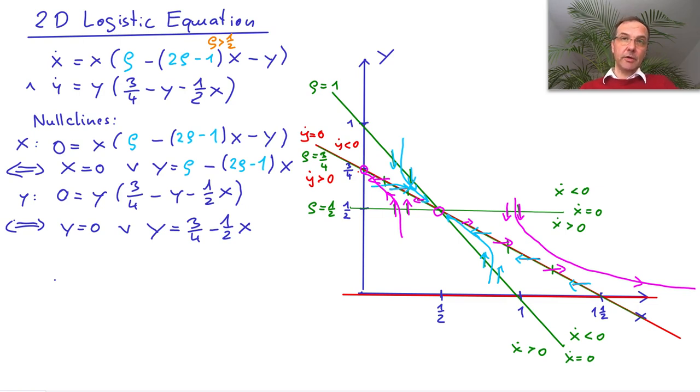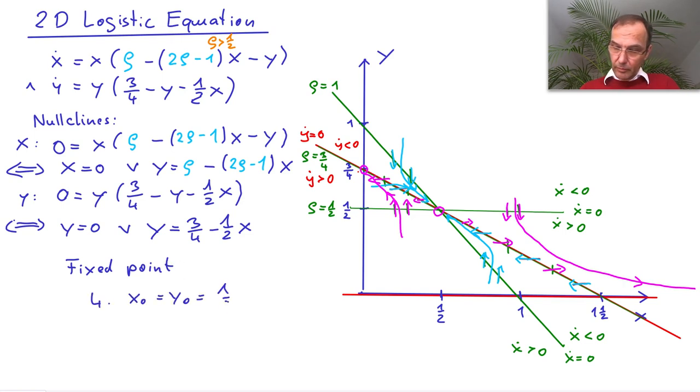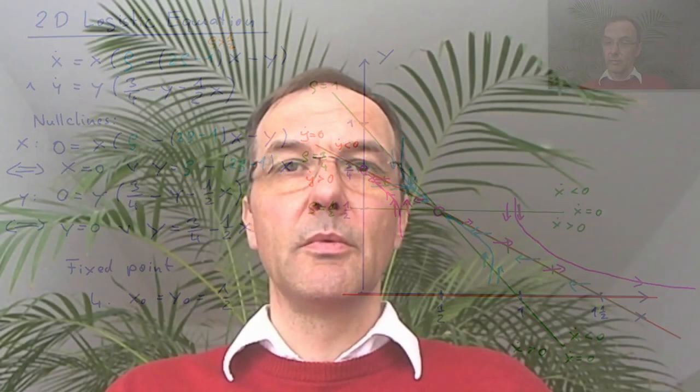Here we have mainly considered the fourth fixed point, but there are three other ones. You can see that you can do the qualitative analysis even when you have parameters in the system that change the qualitative behavior: look at the null clines, see how they change along with the parameters, and then determine the consequences for the dynamics. But like before, we can go a step further and do a quantitative analysis of a fixed point under a changing parameter. That is what I want to do next for the fixed point (1/2, 1/2).